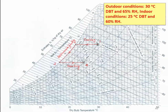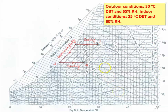We solve using the psychrometric chart. The outdoor conditions are 30°C dry bulb temperature and 65% relative humidity — this is point 1, which lies between the 60% and 70% relative humidity lines. The indoor conditions — the required conditions — are 25°C dry bulb temperature and 60% relative humidity, this is point 4. The process is reducing temperature and decreasing water vapor content: cooling and dehumidification.